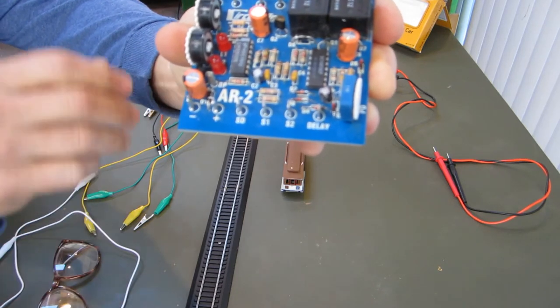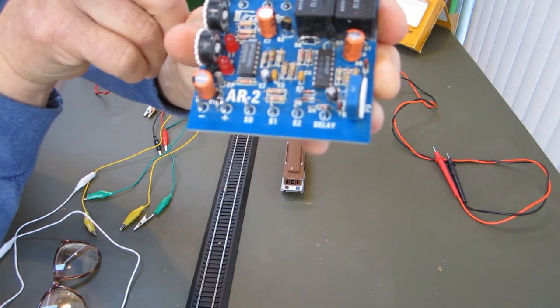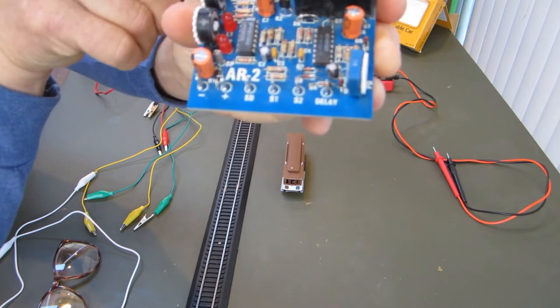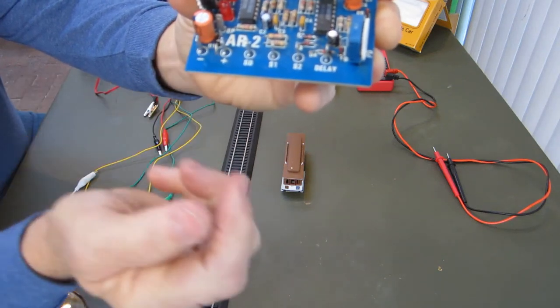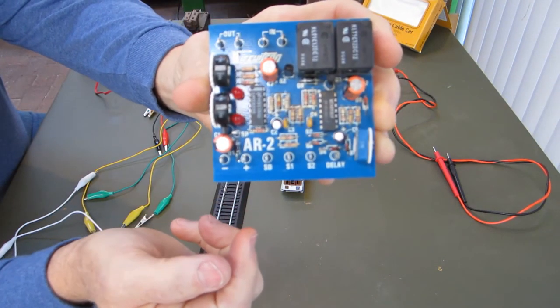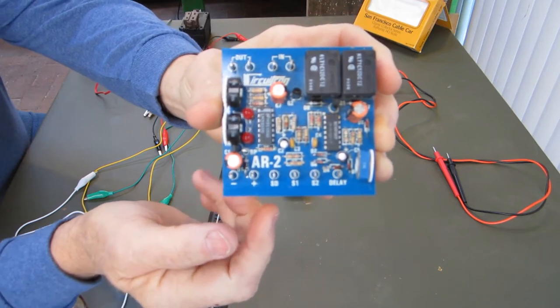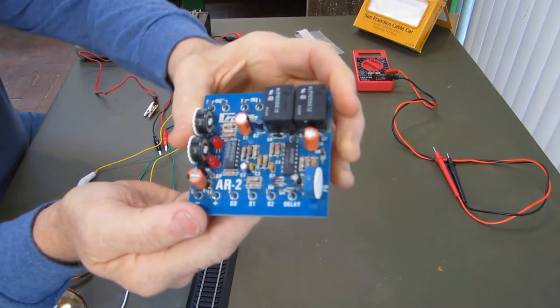Up here you can see the DC power in and out and the hookups here and the power in for the circuit board. I'll be showing you that wiring as we set up and demonstrate how it works.